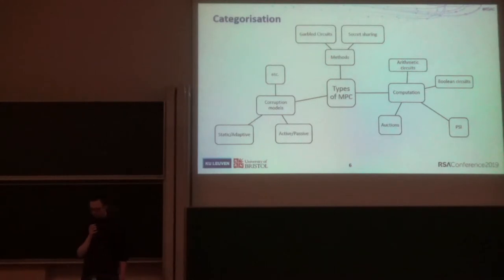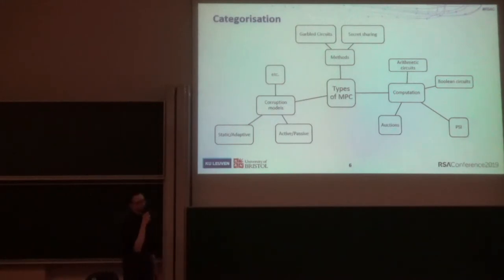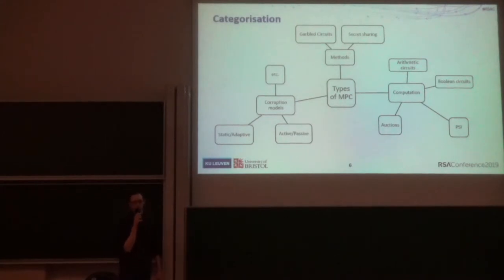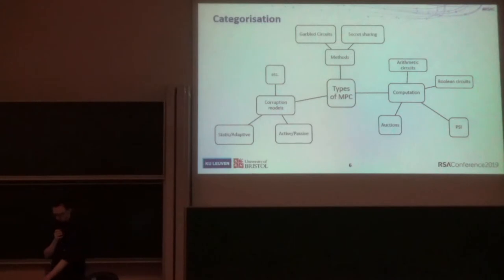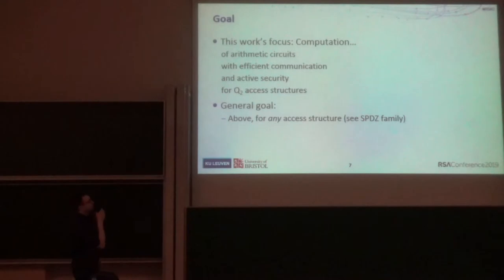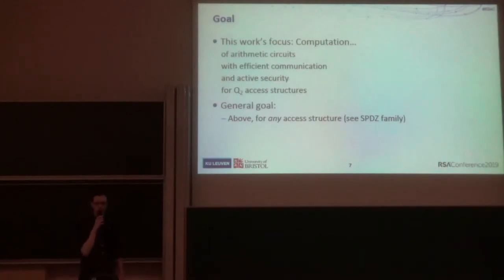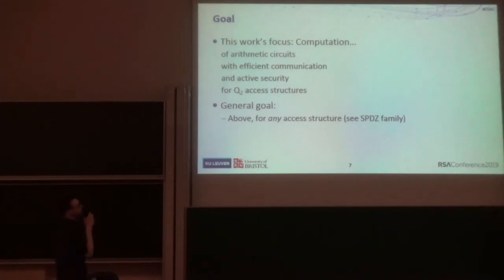We can talk about different types of adversaries we want to protect against. A hospital might be trusted to run the protocol correctly — that's what we would call a passively secure protocol. But it might be that some of the people with the data want to try and learn extra information about the data and deviate from the protocol description as an active adversary. In this protocol, we're going to look at how to compute arithmetic circuits and optimize for communication efficiency. We're going to address active security, where parties may deviate arbitrarily from the protocol description, and we're going to look at Q2 access structures.